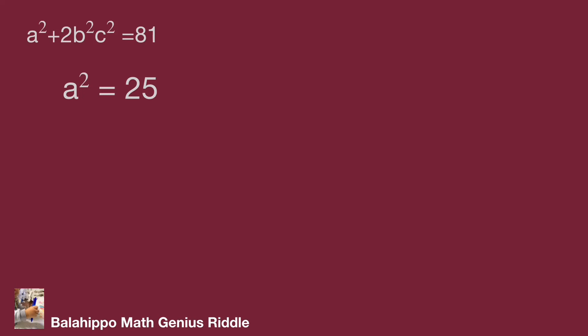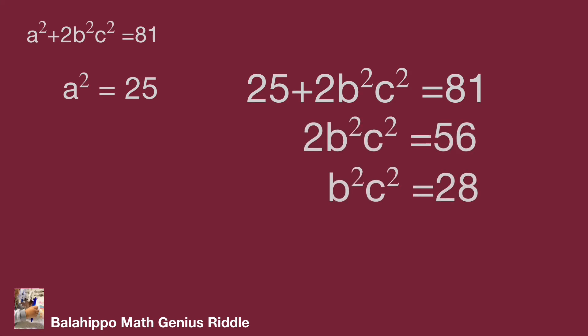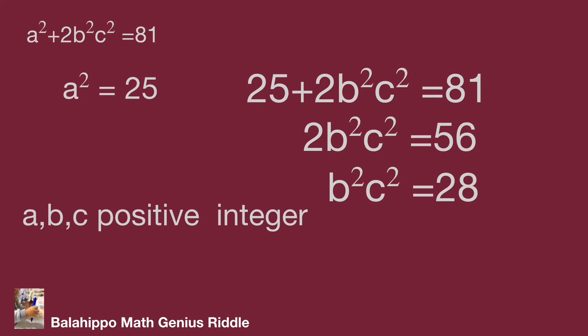If a squared equals 25, substituting and simplifying gives b squared times c squared equal to 28. But since a, b, c must be positive integers, b and c cannot meet this requirement. The answer is false.